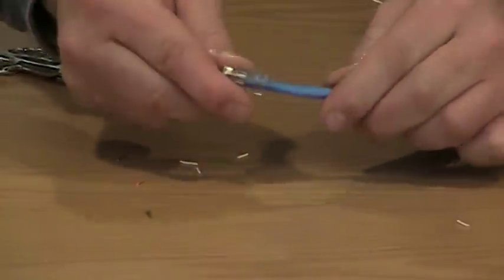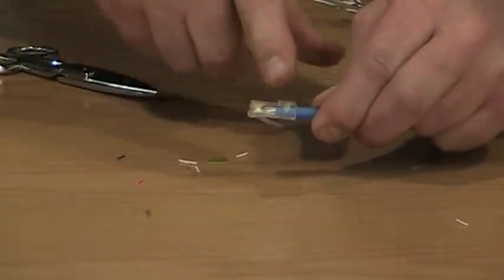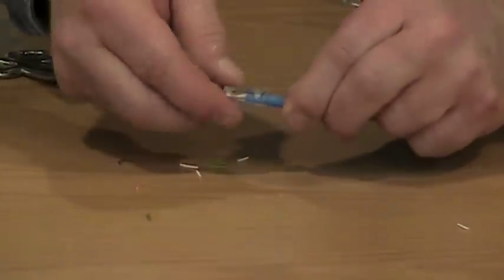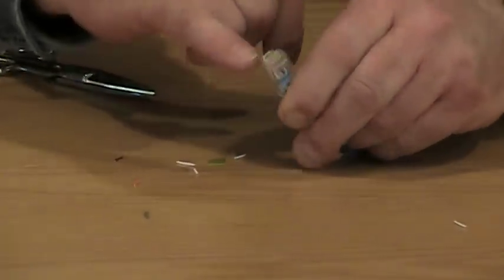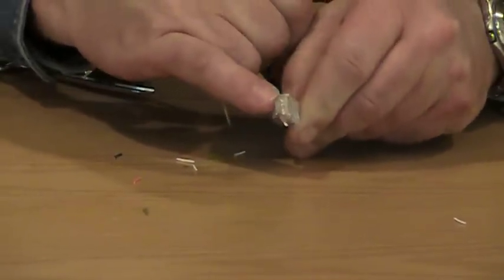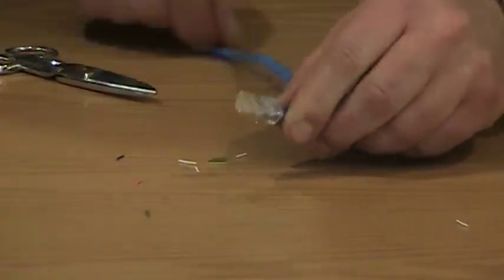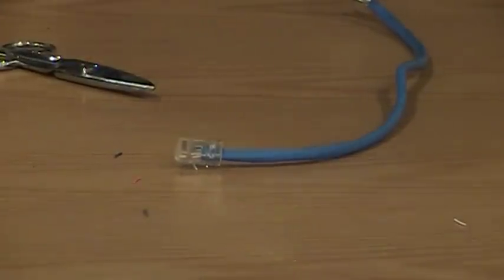There's a properly terminated Cat 6 plug. Strain relief is all the way down. The wires are all the way through the sides. I can make sure the liner is all the way through here. I can see all the conductors through the clear front of the plug as well. It's a properly terminated Cat 6 plug. If we were doing a patch cord, we would do the exact same thing on the other side.